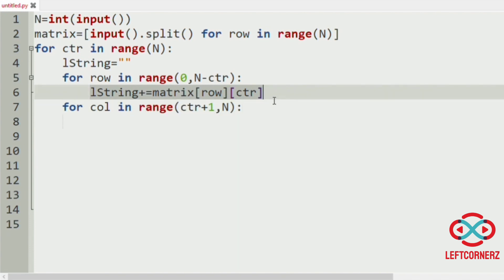Then we are appending the L string plus equals matrix of N minus ctr minus one and column, which represents the last row layer by layer for every iteration of the counter.